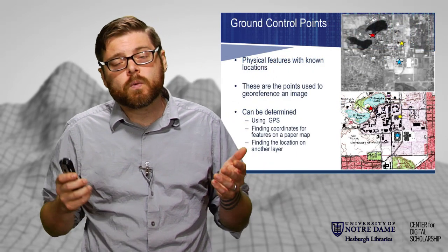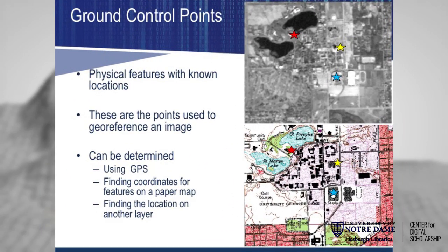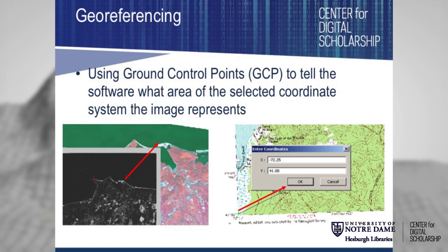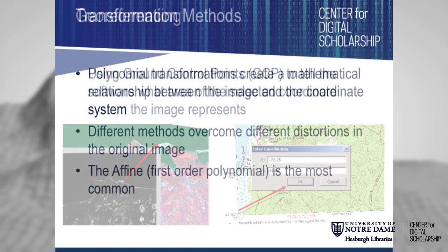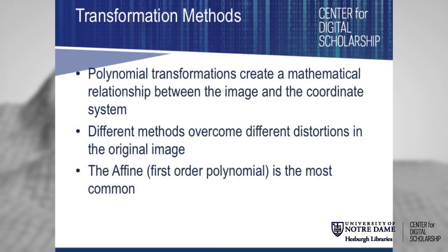To do this, we need known points — what we call GCPs or ground control points. These are physical features with a known location — a location where I know the XY coordinates or latitude and longitude, coordinates found between two different images, or coordinates printed on the map itself. I just need known locations to tell the software where those places are. Once I have a few points, I can begin georeferencing the image using a polynomial transformation to create a mathematical relationship between real-world location and each pixel in that image.